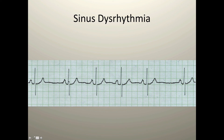Looking at this rhythm: before each QRS complex there's a P wave — one P wave followed by one QRS complex throughout the tracing. For the PR interval using one representative beat: about three to three and a half small boxes, so right around 120 to 140 milliseconds, absolutely within the normal range. For QRS duration: two small boxes — 80 milliseconds, which is a normal time interval for depolarization of the ventricles.